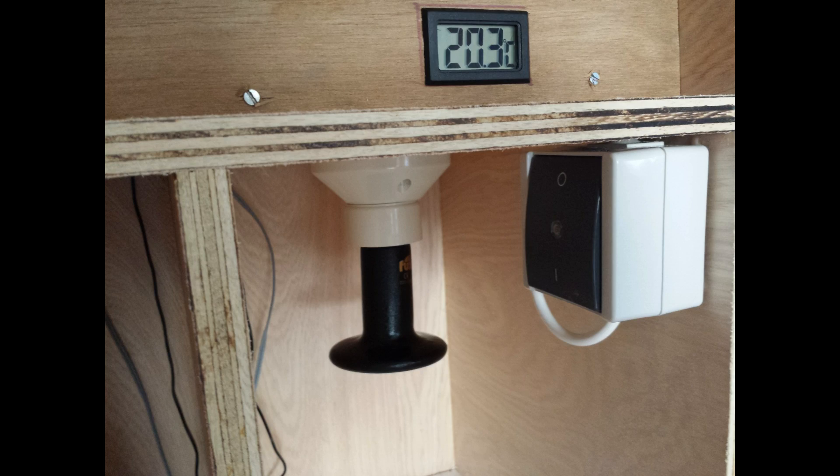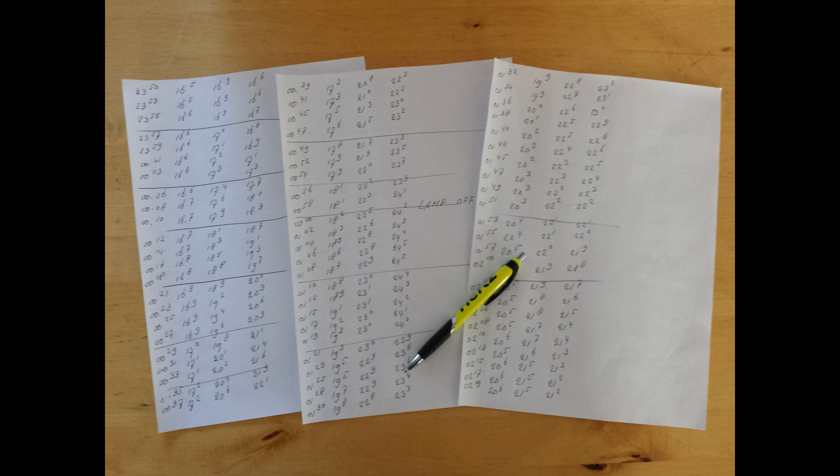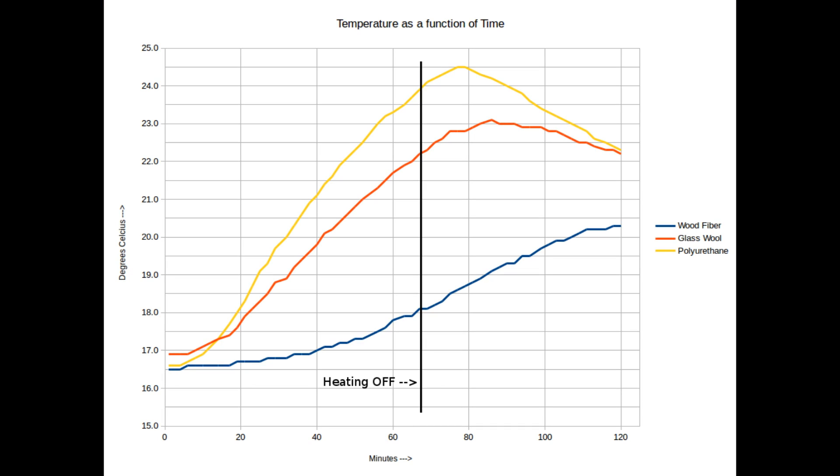So here we go. We switch on the three infrared lamps. We record the temperatures in the three temperature readouts for a period of about two hours and then we put everything in a spreadsheet and here's the graph that we get.